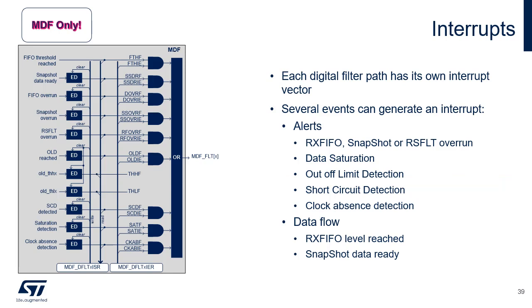This figure details the MDF interrupt management. Each digital filter path has its own interrupt vector. Alert events and data flow events can generate an interrupt. The alert events are RxFIFO snapshot or RSFLT overrun, data saturation, out-of-limit detection, short-circuit detection, and clock absence detection. The data flow events are RxFIFO level reached and snapshot data ready.